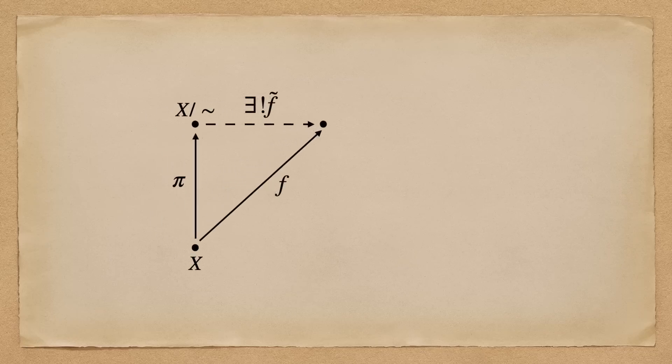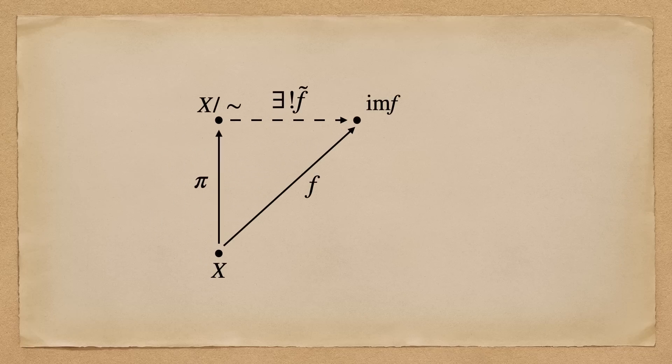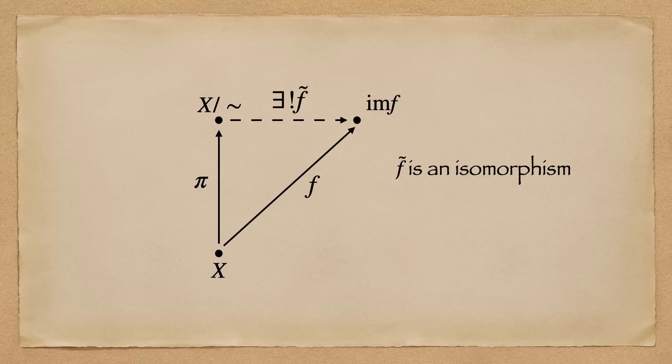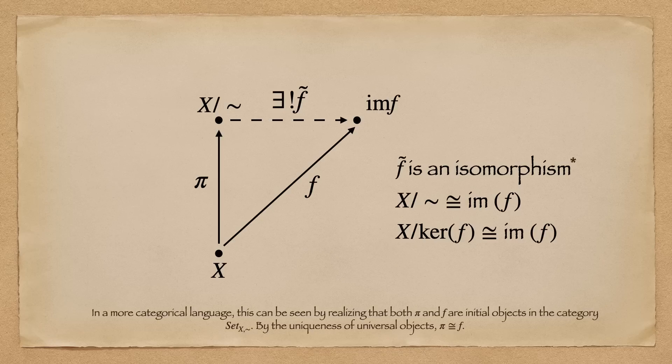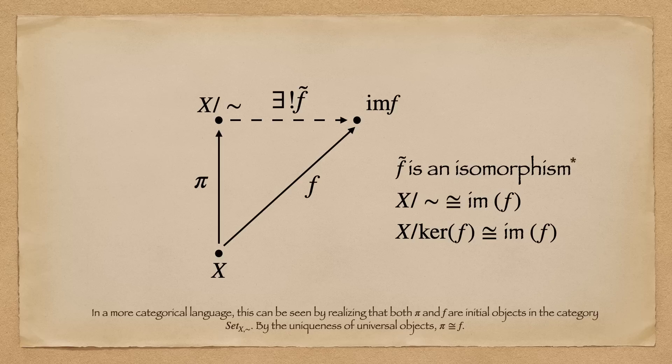In the special case when f is mapped to the image of f, this induced morphism is in fact an isomorphism because it happens to be injective and surjective. Therefore, we get an isomorphism between the quotient set and the image of f. In other words, an isomorphism between x mod the kernel of f and the image of f, which is precisely the statement of the first isomorphism theorem.